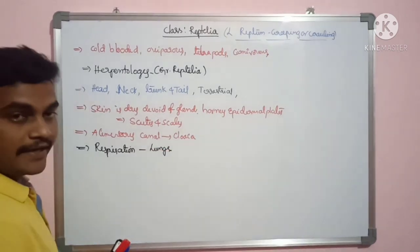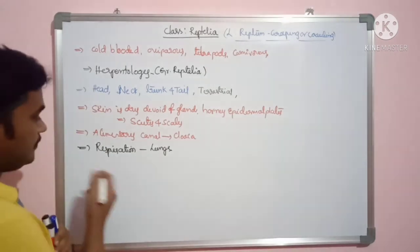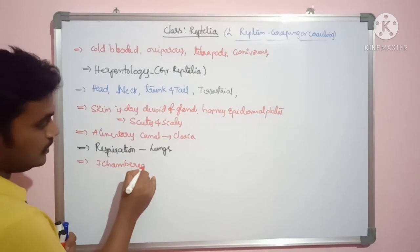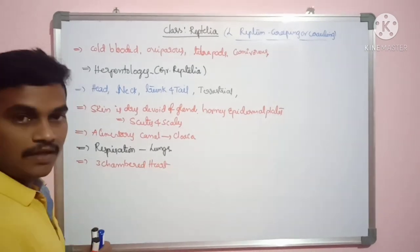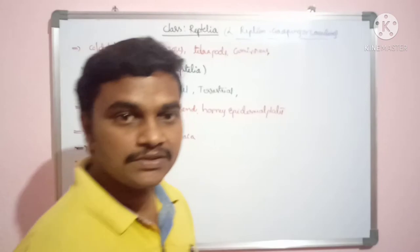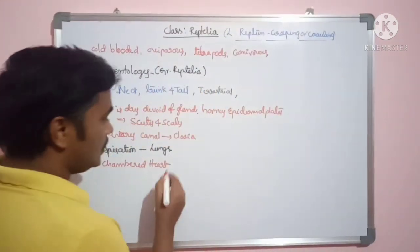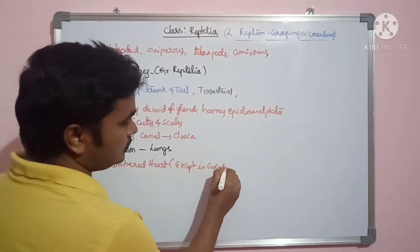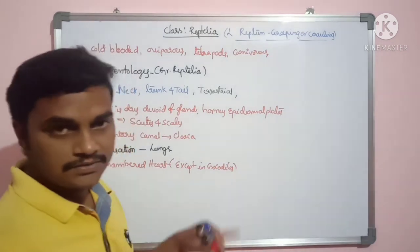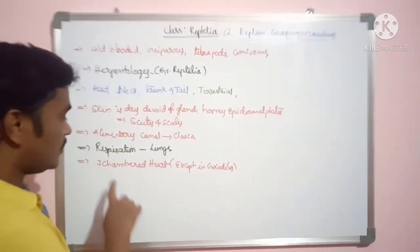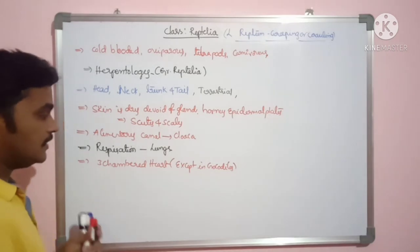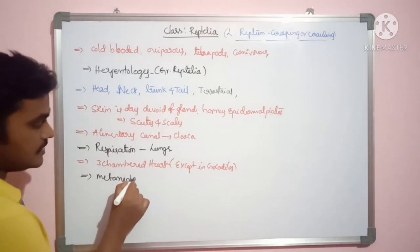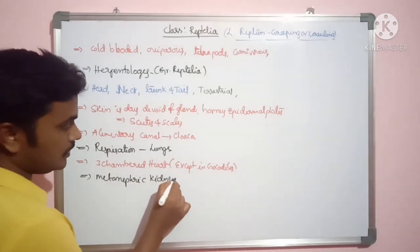Respiration is by lungs. At the same time, the heart contains three chambers — a three-chambered heart is present. However, there is an exception: crocodiles contain a four-chambered heart. Except in crocodiles, all reptiles have a three-chambered heart.